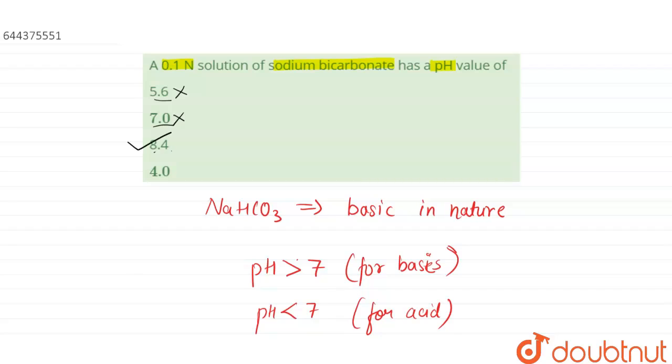Next one is 8.4. 8.4 is the only value that is greater than 7, so that means the pH value of sodium bicarbonate will be 8.4. Next one is 4, that means this is also incorrect because pH less than 7 will be for acids. So our option number three is the correct answer.